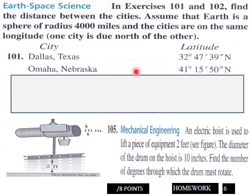Page six of your homework: We've got a word problem here. Sphere of radius 4,000 miles, the cities are on the same longitude. Basically, you get to use minutes and seconds here of angle measure to find the distance between the cities. I'll let you handle that one.